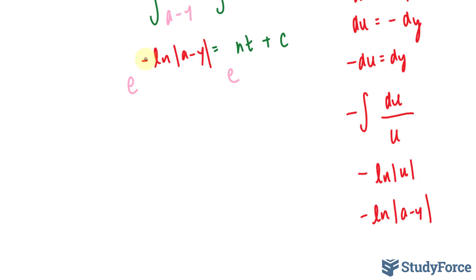Another way to write this is to put this negative as a power of a minus y. And that takes that away. And we have e to the power of ln, which cancels out. So we're left with a minus y to the power of negative 1.